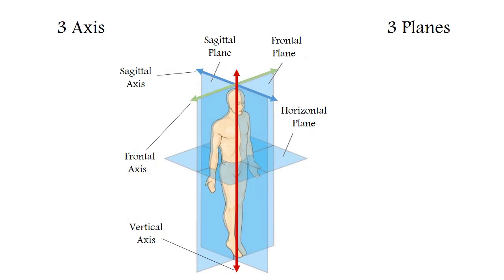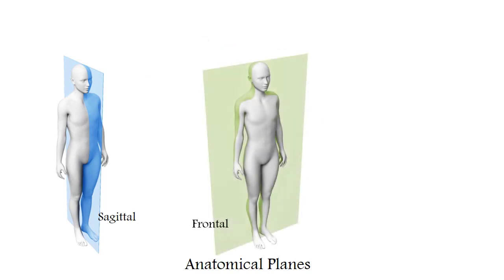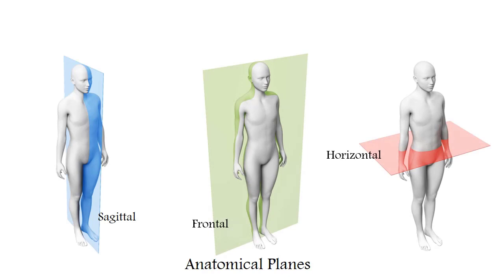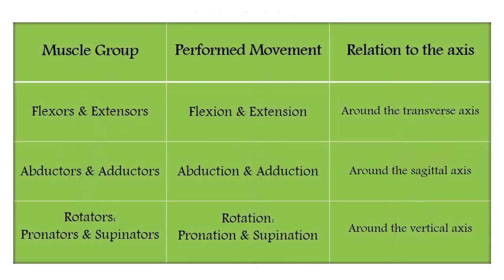There are three mutually perpendicular planes and three axes. The sagittal plane divides the body into right and left halves; the frontal plane into front and rear; and the horizontal plane into upper and lower. The sagittal axis goes from front to back; the frontal or transverse axis goes from right to left; and the vertical axis goes from top to bottom. Flexion and extension take place around the transverse axis, abduction and adduction around the sagittal axis, and rotation occurs around the vertical axis, which on the limbs divides into supination and pronation.